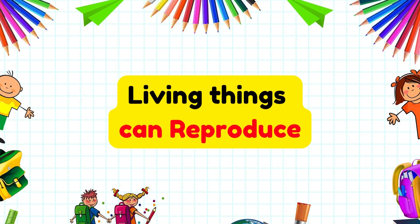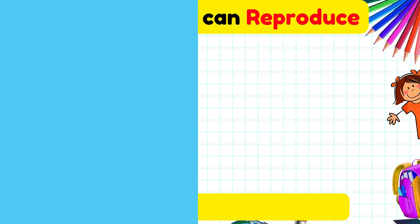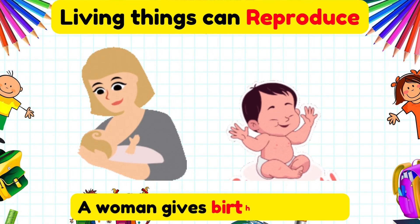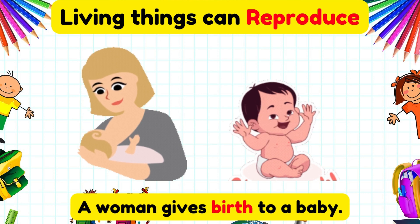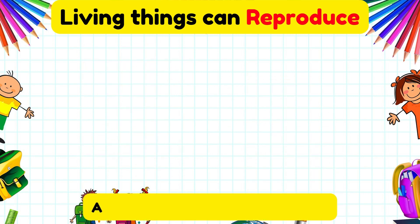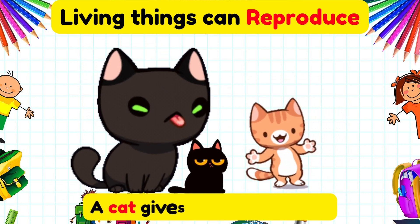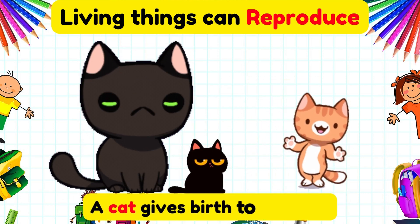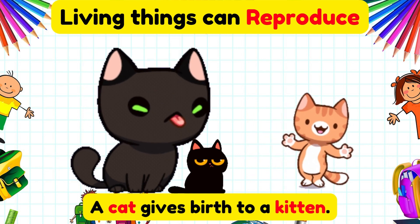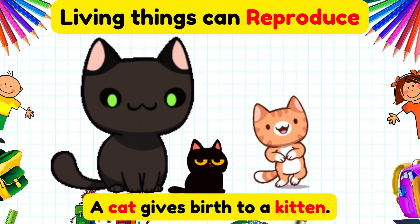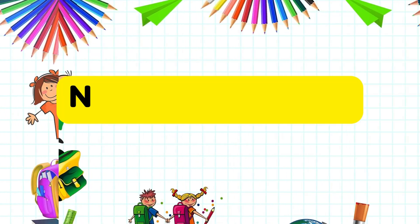Living things can reproduce. A woman gives birth to a baby, and a cat gives birth to a kitten. Living things can reproduce.